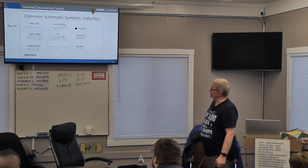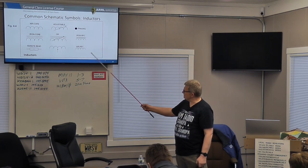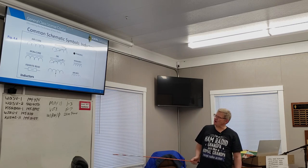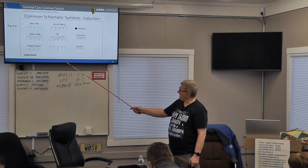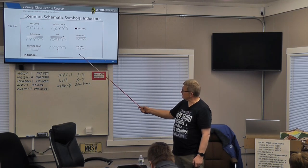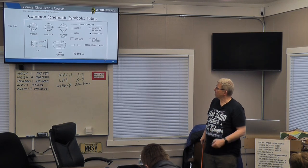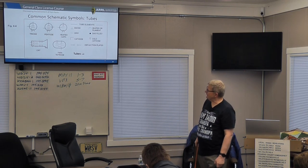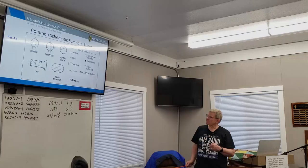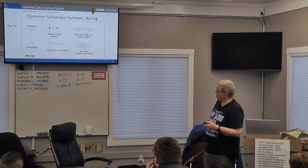Inductors come in types: air core, adjustable, non-iron, ferrite bead, and others. The common thread in most inductor symbols is the loops — they look like a series of M shapes. Different kinds of schematics also cover tubes and wiring diagrams.